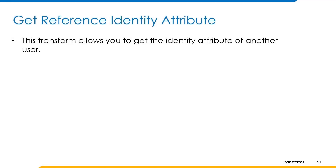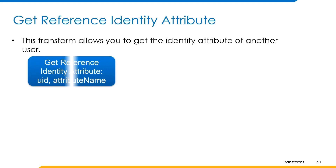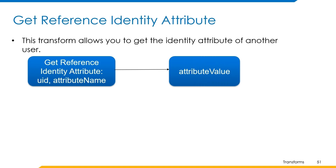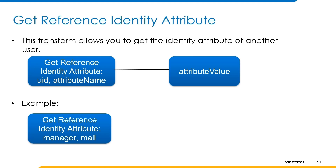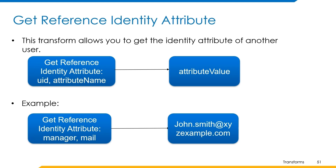Get reference identity attribute transform is used as an out-of-box rule transform provided through SailPoint's cloud services deployment utility rule. This transform allows you to get the identity attribute of another user. We specify the UID of the user and the attribute name to be retrieved, and the corresponding attribute value is returned as output. We can use the manager keyword to look up the user's manager and get the manager's identity attribute. For example, with manager as UID and mail as the attribute name, the manager's email john.smith@xyzexample.com is returned as output.